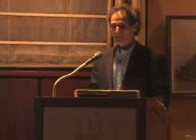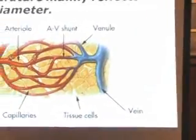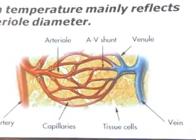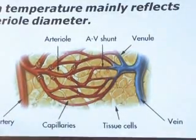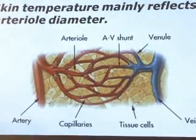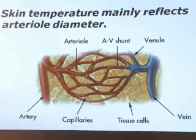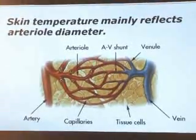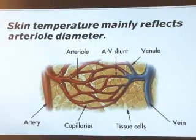Skin temperature of the extremities is another way to monitor stress-related changes. A temperature sensor is attached to the fingers or toes to monitor these changes. Increased nervous system activity associated with anxiety and hypervigilance produces constriction of blood vessels, leading to cold hands and feet. A temperature sensor can monitor the coldness of the hand while the skin conductance sensor can monitor the clamminess — two ways of looking at the stress response.